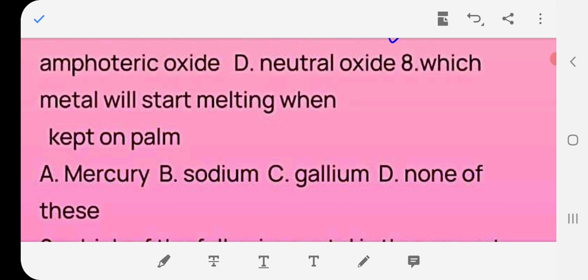Question number eight: which metal will start melting when kept on palm? A. mercury, B. sodium, C. gallium. The answer is C, gallium.